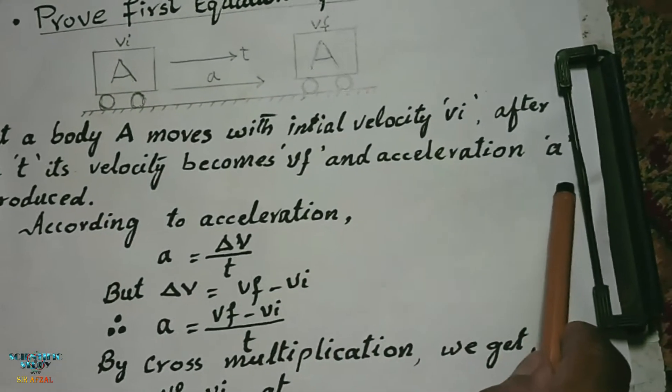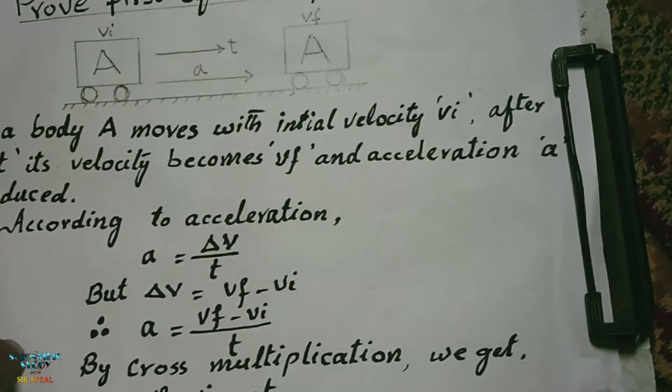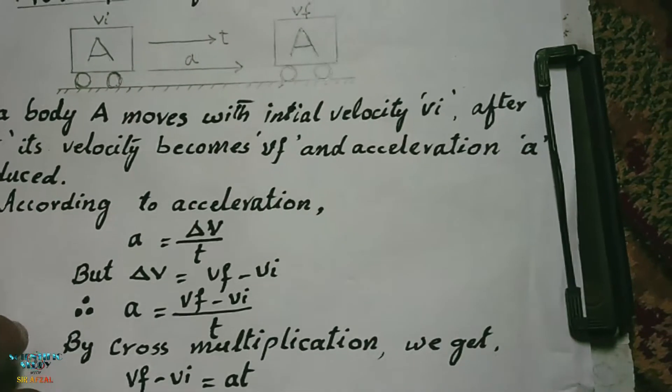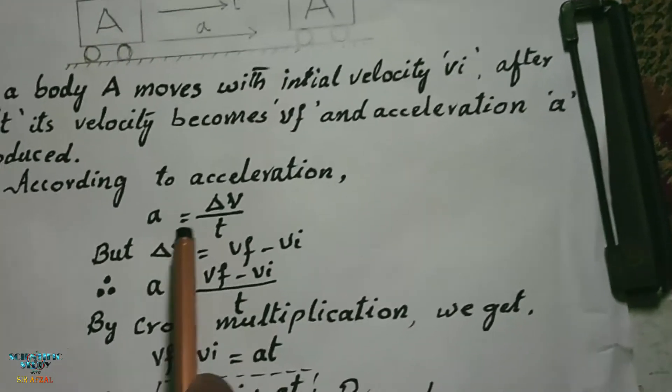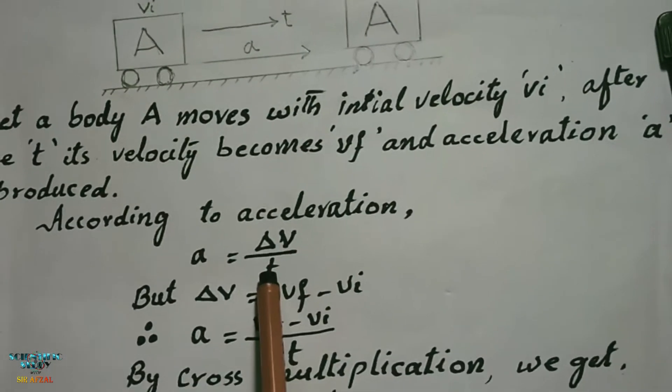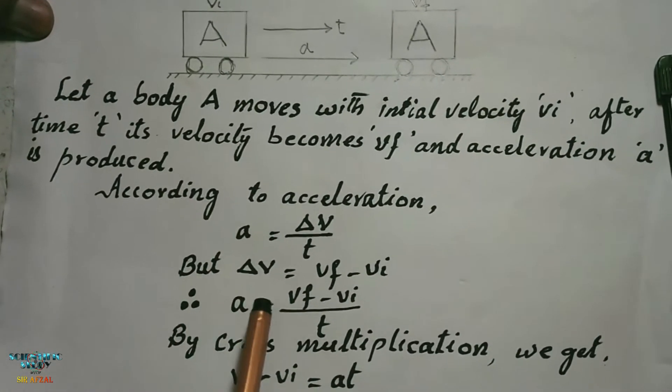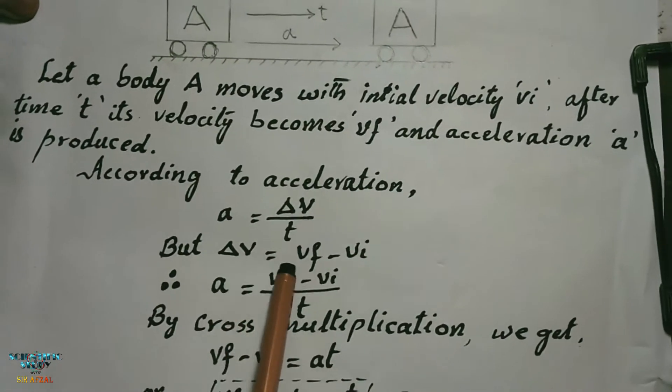Now as you have read about acceleration, according to acceleration a is equal to Δv upon t, where Δv is change in velocity. We can write it: Δv is equal to vf minus vi.